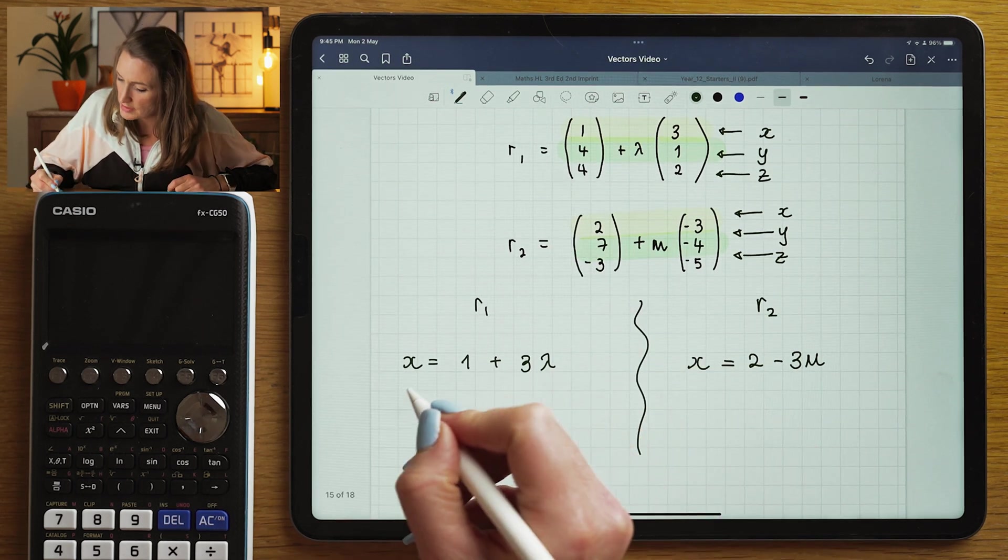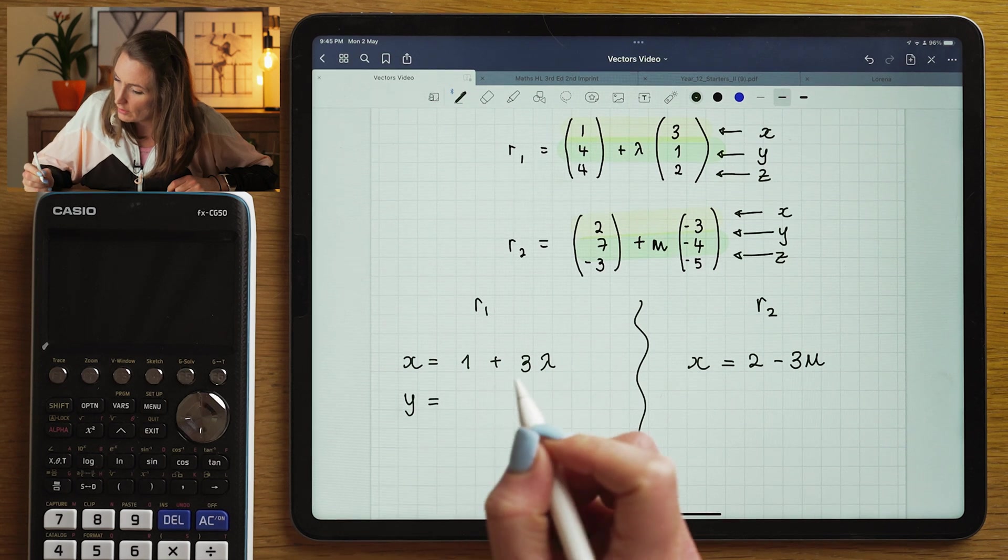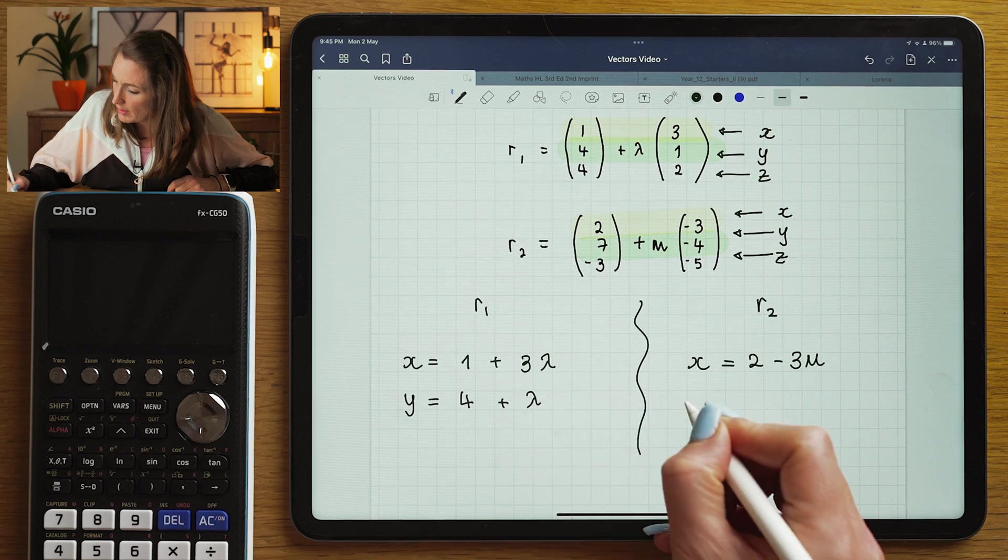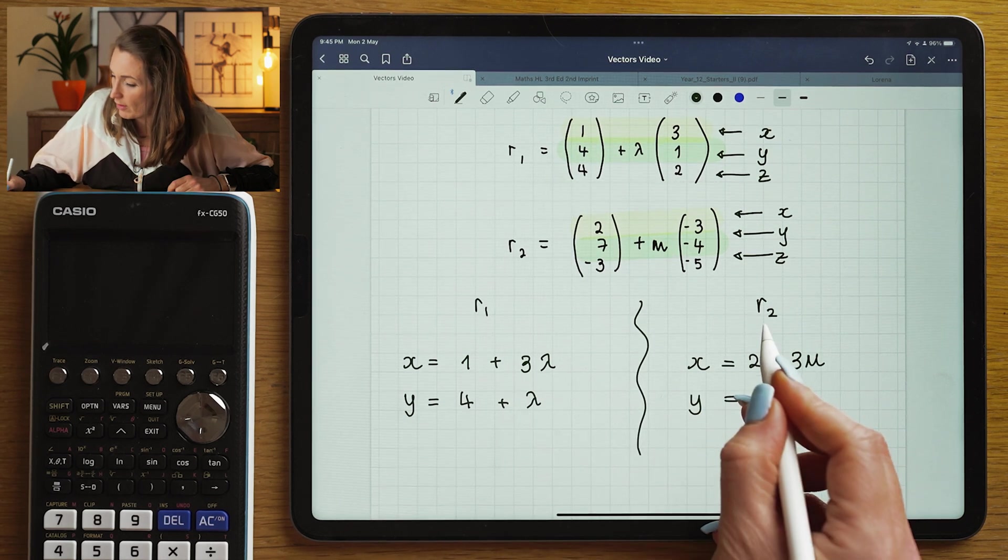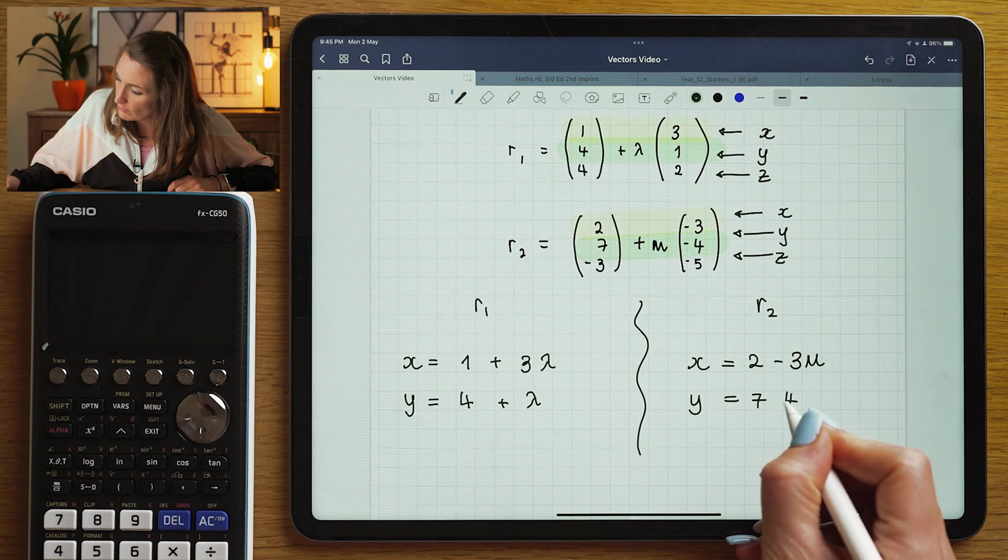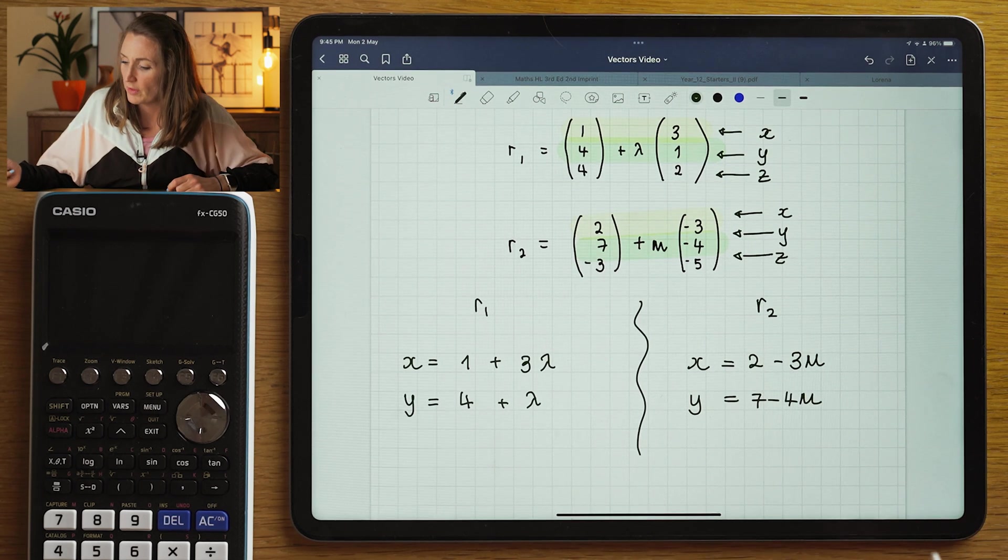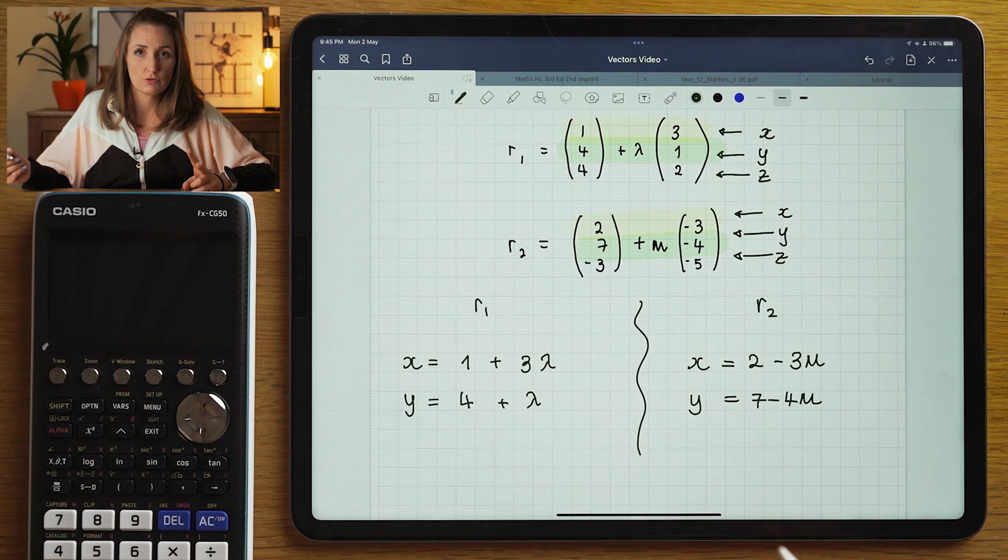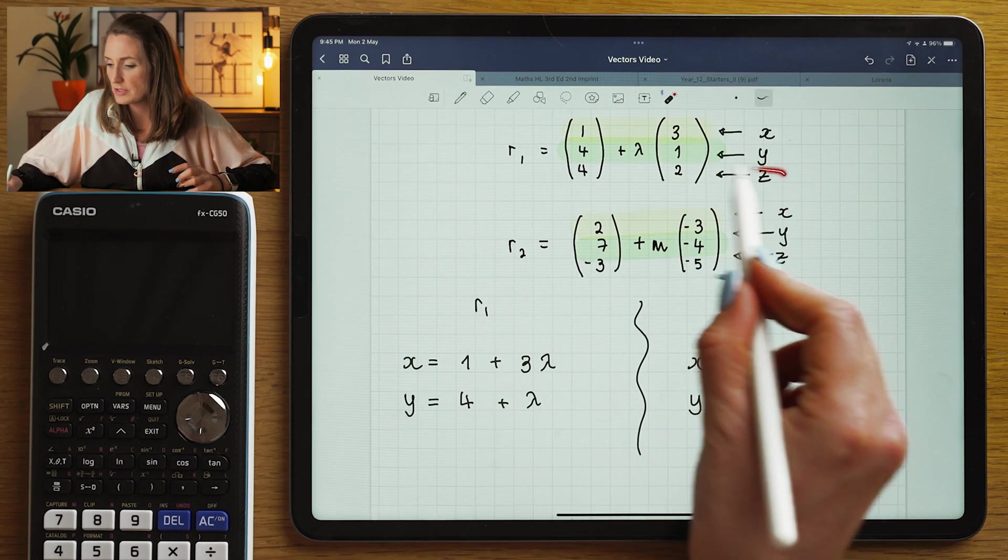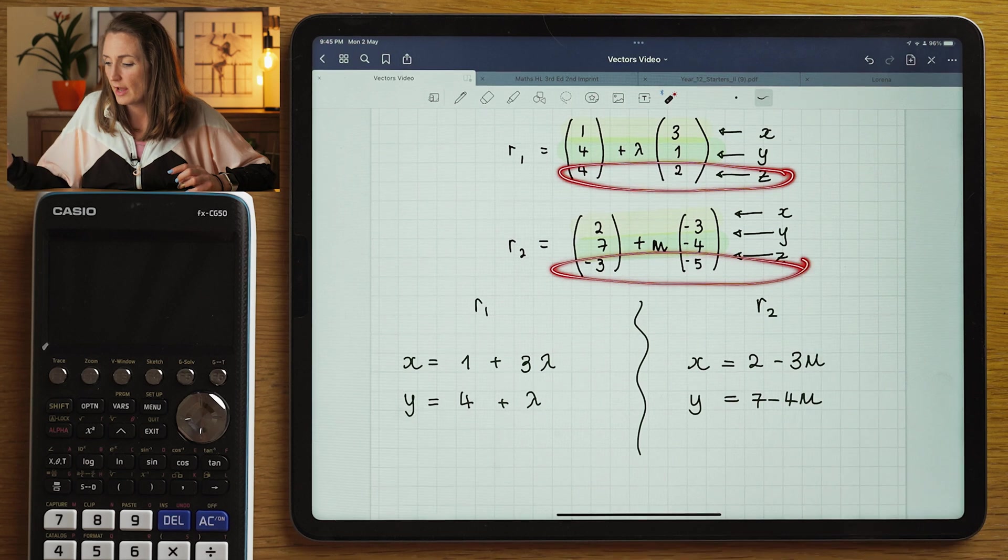We're going to repeat that process for Y. Looking at R1, I can see that my first equation would be 4 plus lambda. And looking at Y over here from R2, I can see it would be 7 minus 4 mu. Now I can stop there because I've got two equations and two unknowns, but we will be using the last equation, the Z equation, later on.